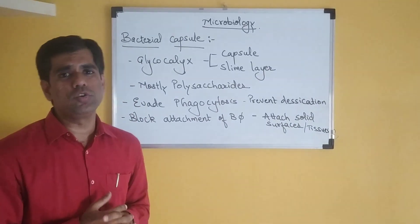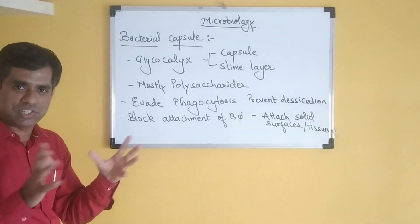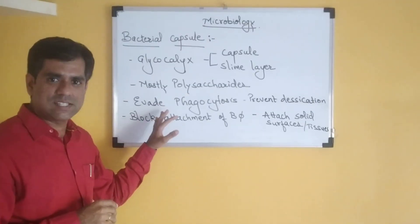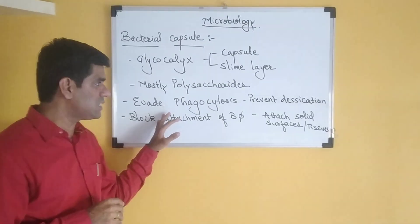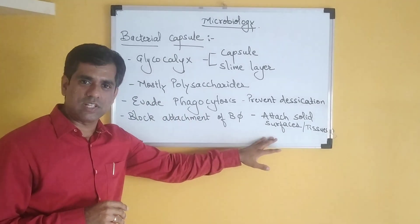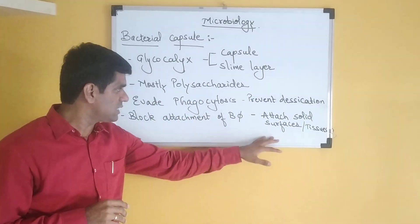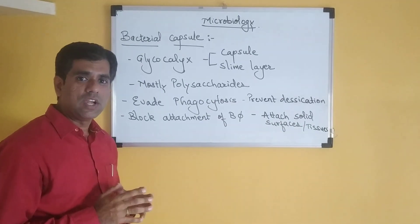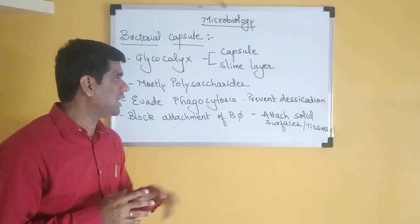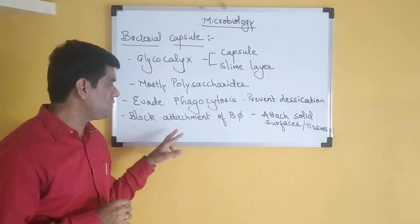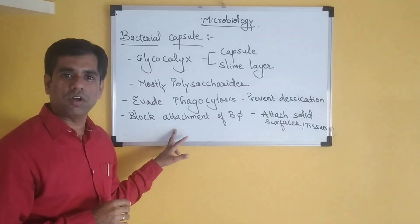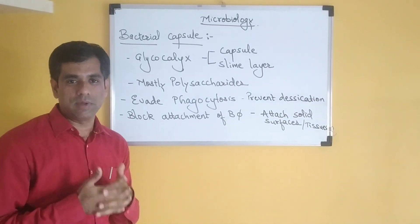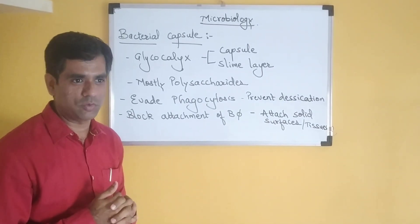So basically, the capsule performs various functions. To recall the few basic functions: it evades phagocytosis, it attaches to tissues and solid surfaces — both of which increase the virulence power of the bearing bacteria. It prevents the bacteria from desiccation, and it prevents attachment of bacteriophages. So this capsule is of great benefit to the bearing bacteria. Thank you.